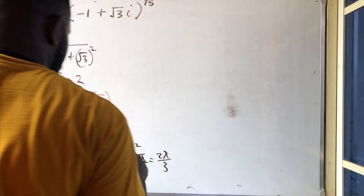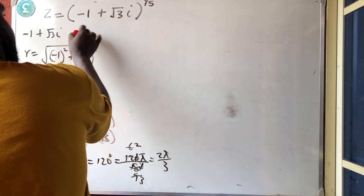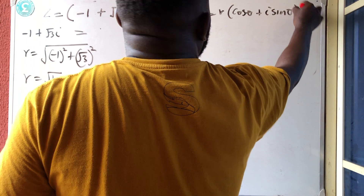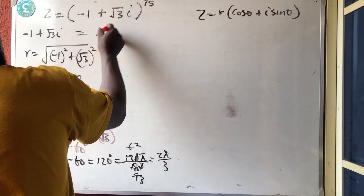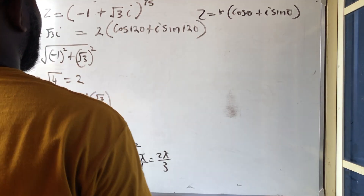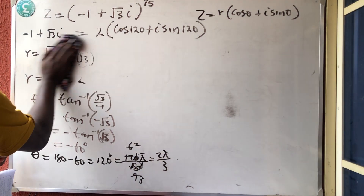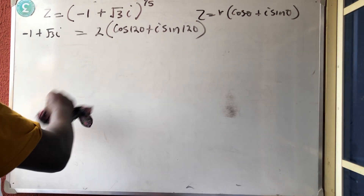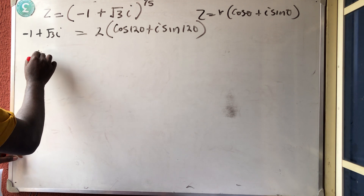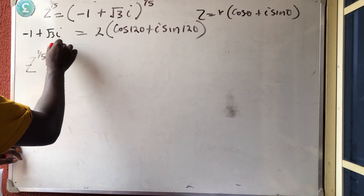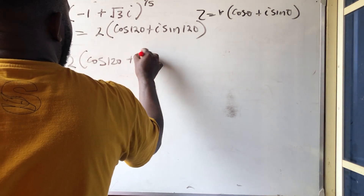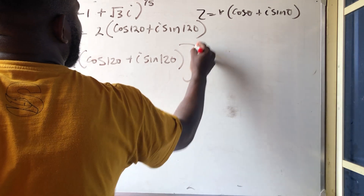So what do we have? Don't forget that z is equal to R bracket (cos theta plus i sine theta). So R is 2: z = 2(cos 120 + i sine 120). This is the polar form. So z raised to power 1 over 5 is equal to 2(cos 120 + i sine 120) all raised to power 1 over 5.